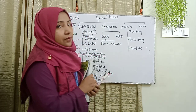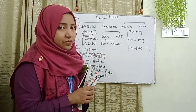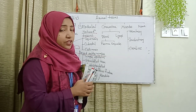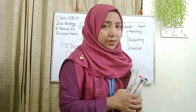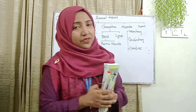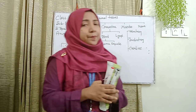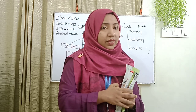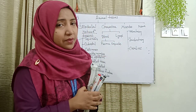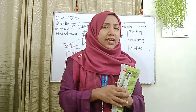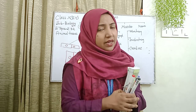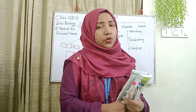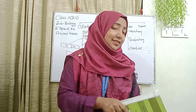To recap: our second animal tissue is connective tissue, which is of three types — fibrous connective tissue, skeletal connective tissue (with subtypes cartilage and bones), and fluid connective tissue (with subtypes blood and lymph). Blood has two components: plasma and corpuscles.